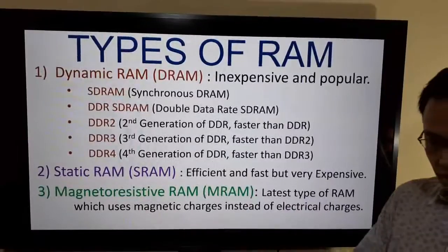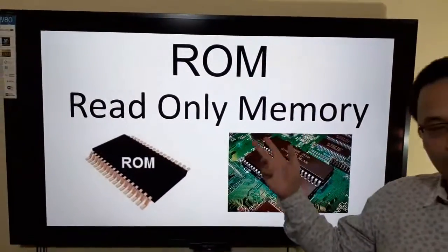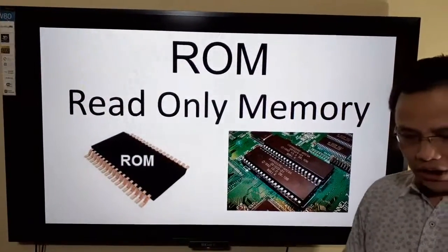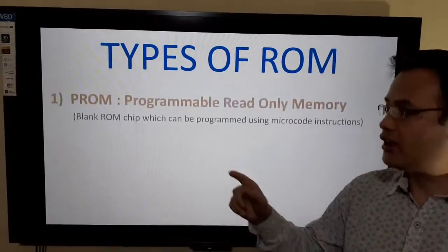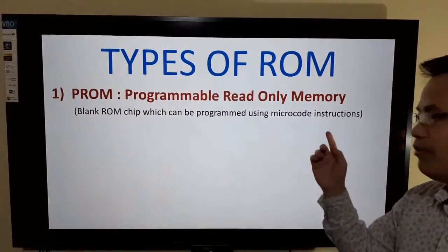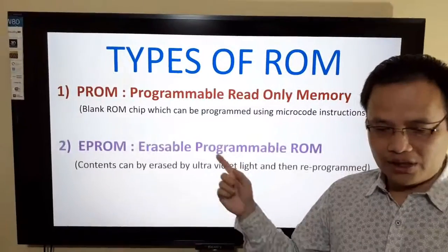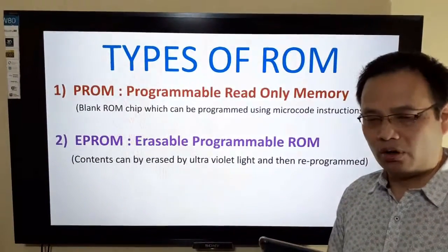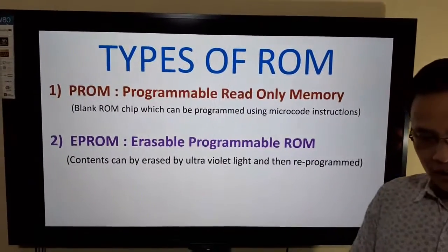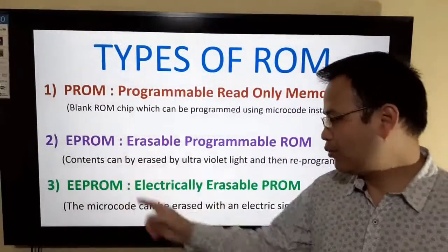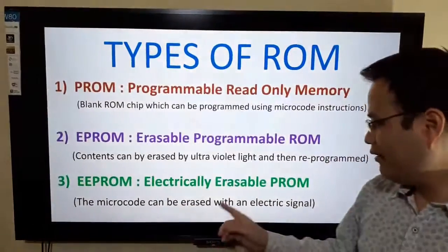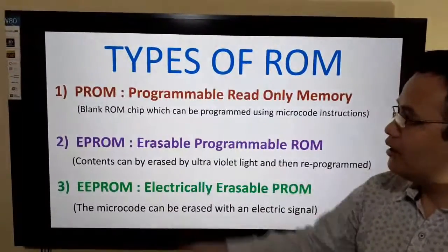Now let's look at ROM, another type of primary memory. ROM stands for Read-Only Memory. The first type is PROM (Programmable Read-Only Memory), a blank ROM chip that can be programmed using microcode instructions. The second type is EPROM (Erasable Programmable ROM), whose content can be erased by ultraviolet light and then reprogrammed. The third type is EEPROM (Electrically Erasable Programmable Read-Only Memory), where the microcode can be erased with an electric signal.